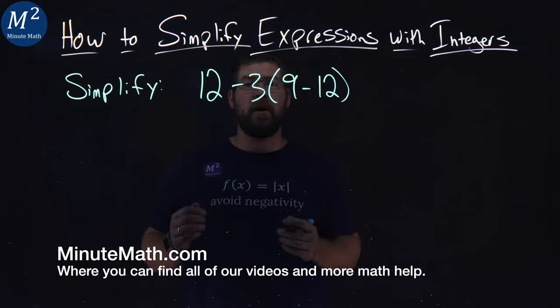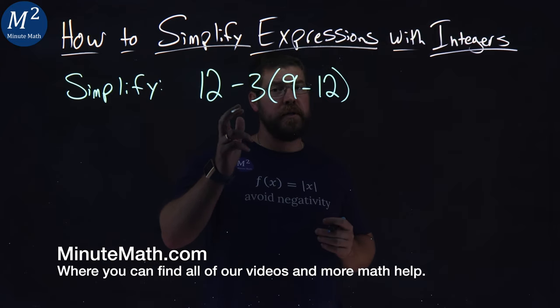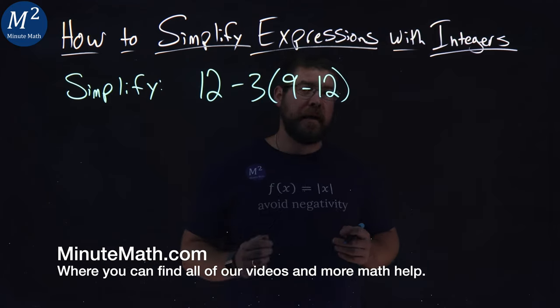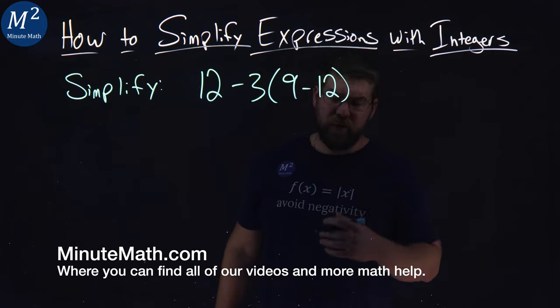We're given this problem here: 12 minus 3 times 9 minus 12, and 9 minus 12 is in parentheses, and we simplify.